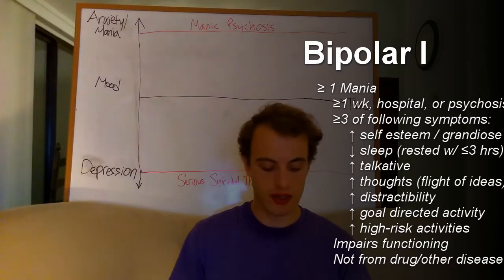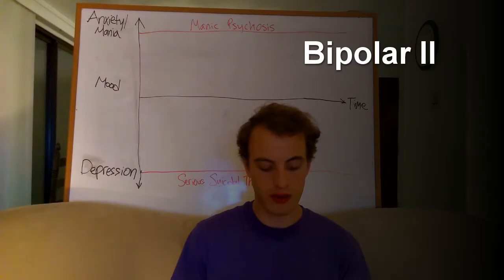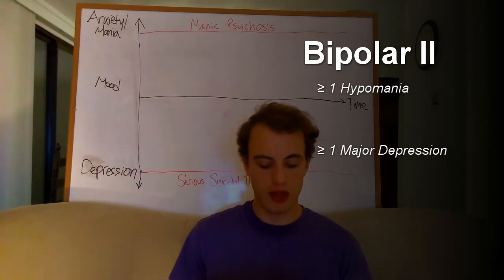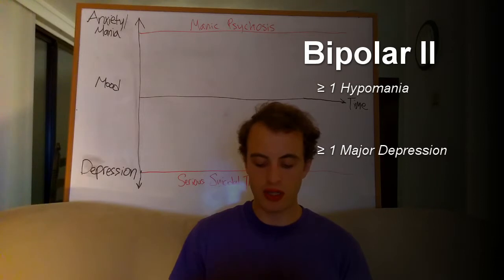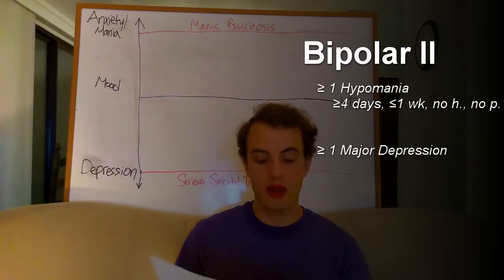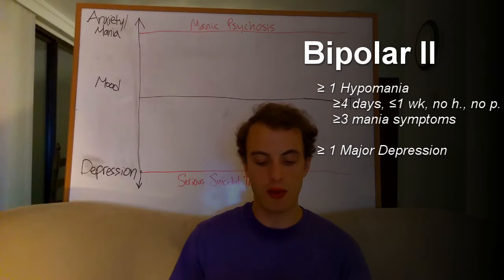That's Bipolar 1's diagnostic criteria. For Bipolar 2 disorder, it is necessary to meet the following criteria for a current or past hypomanic episode and a current or past major depressive episode. Hypomanic episode: a distinct period of abnormally and persistently elevated, expansive, or irritable mood and abnormally and persistently increased activity or energy, lasting at least four consecutive days — instead of the week required for mania — present most of the day, nearly every day. The symptoms are basically the same, but it lasts less time to be a hypomania.